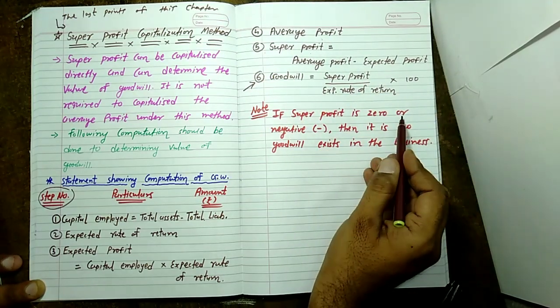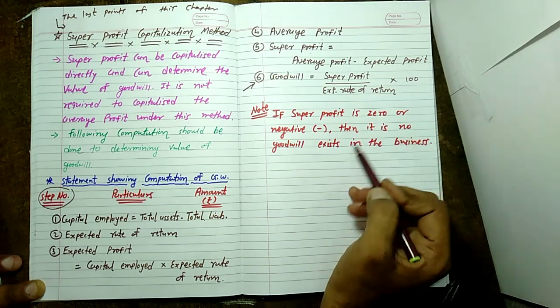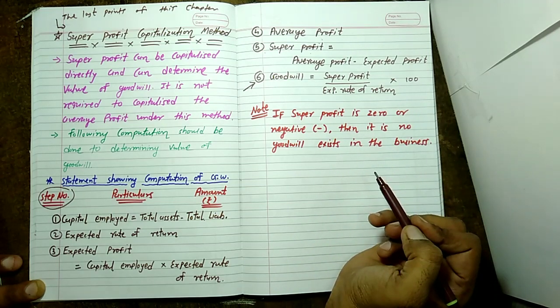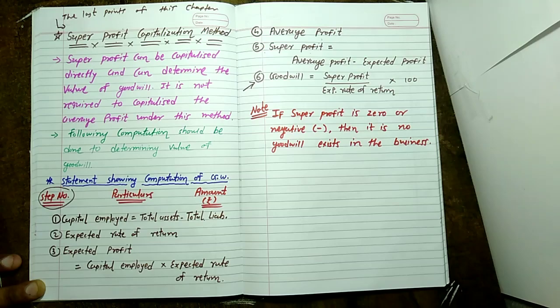Note: if super profit is zero or negative then no goodwill exists in the business. Let us now understand by example.